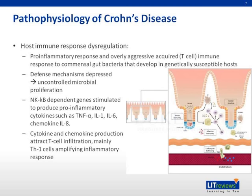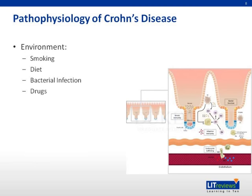A major component in the pathophysiology of Crohn's disease consists of host immune response dysregulation. Mucosal defense mechanisms include mucus-coated epithelium with tight junctions, IgA secretion, and defensins. There is a dysregulated pro-inflammatory response and overly aggressive acquired T-cell immune response to commensal gut bacteria that develops in genetically susceptible hosts. Defense mechanisms become depressed, leading to uncontrolled microbial proliferation. NF-kappa-B-dependent genes are stimulated to produce pro-inflammatory cytokines such as TNF-alpha, interleukin-1 and 6, chemokines, and interleukin-8. Cytokine and chemokine production attract T-cell infiltration, mainly T-helper 1 cells, amplifying the inflammatory response.